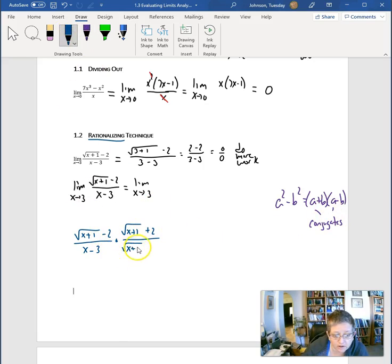We're going to multiply by the conjugate of the radical, both numerator and denominator. When we multiply, square root times square root gives us x plus 1. The square root times positive 2 and the square root times negative 2 cancel each other out. We're not going to simplify anything in the denominator until we have to.